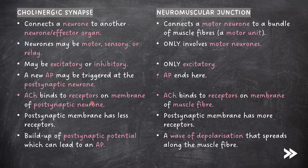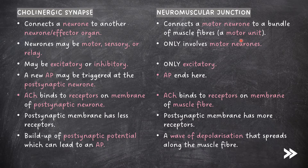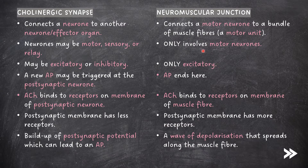We also need to be able to compare the differences between cholinergic synapses and neuromuscular junctions. A cholinergic synapse connects a neuron to another neuron or effector organ, whereas a neuromuscular junction connects a motor neuron to a bundle of muscle fibers called a motor unit. In cholinergic synapses, neurons may be motor, sensory or relay neurons, whereas at neuromuscular junctions, only motor neurons are involved. Cholinergic synapses may be excitatory or inhibitory, and neuromuscular junctions are always excitatory. In a cholinergic synapse, a new action potential may be triggered at the post-synaptic neuron, whereas at a neuromuscular junction, the action potential ends there — it is the end of the neural pathway.